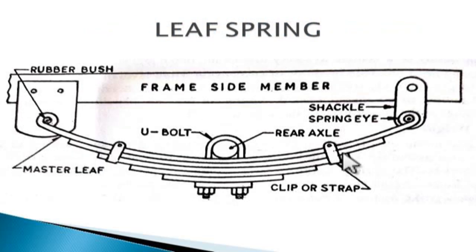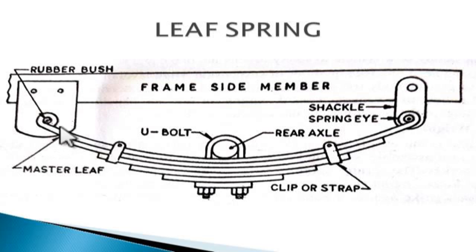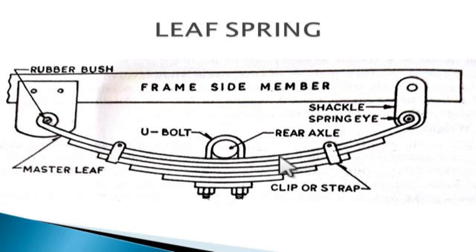The first type is the leaf spring. It is a semi-elliptical type construction consisting of a number of leaves known as blades, which are bound together by a cleat or strap. The longest blade has eyes on its ends. One end of the spring is mounted on the frame with a simple pin — this is the fixed point — and the other end is connected to the shackle, which is the movable point. One end is movable because the spring must accommodate changes in its length with respect to vibration.